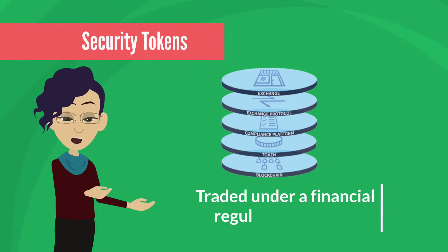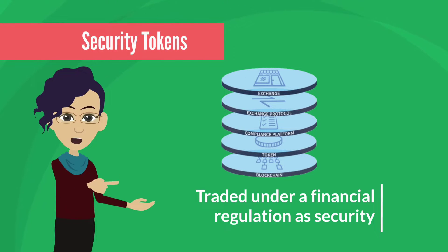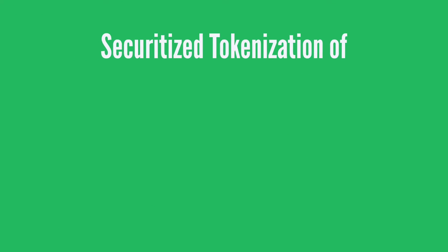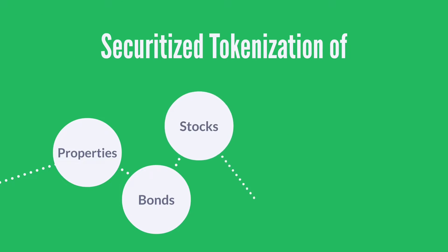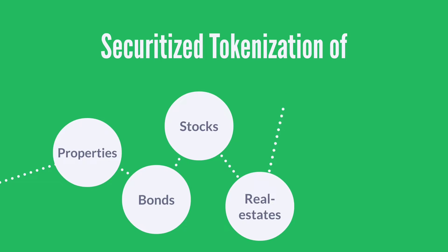Two: security tokens. These are securitized cryptocurrencies that derive value from an external asset that can be traded under a financial regulation as a security. They are therefore used for securitized tokenization of properties, bonds, stocks, real estate, and other real-world assets.